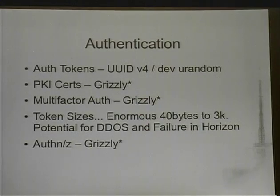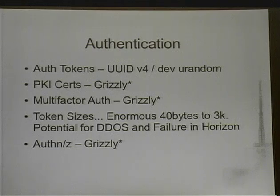DMA access by virtual machines is an area of research. There's a project called Nova at Intel that's a hypervisor focusing on shared DMA access. As for authentication, auth tokens originally used UUID version 4 and /dev/urandom off the Ubuntu instance hosting Keystone, which provided a good amount of entropy. PKI certs are coming in Grizzly, but we've run into serious problems with enormous token sizes causing issues for services like Horizon. We've also seen DDoS issues, so PKI will likely be available but disabled until full Keystone v3 is supported. Multi-factor auth is also coming in Grizzly — until now we haven't had it.